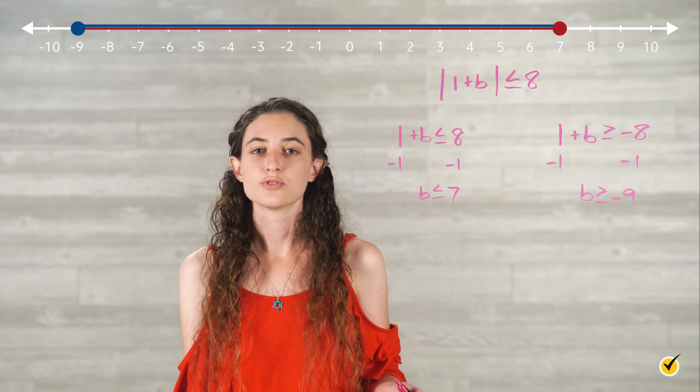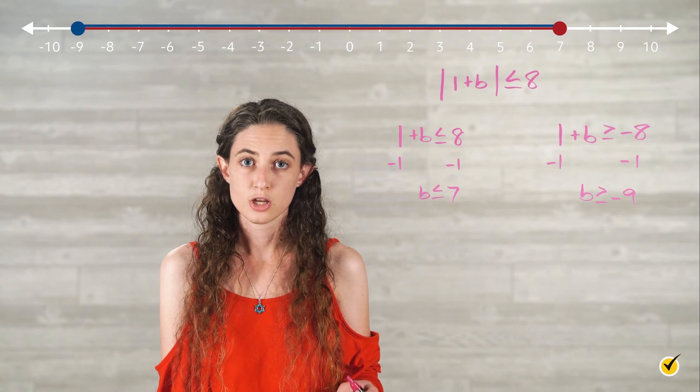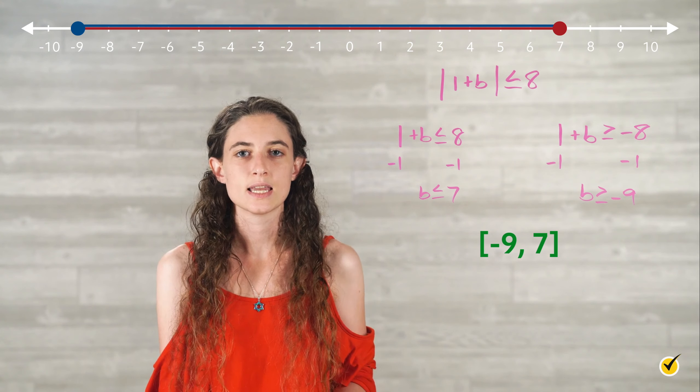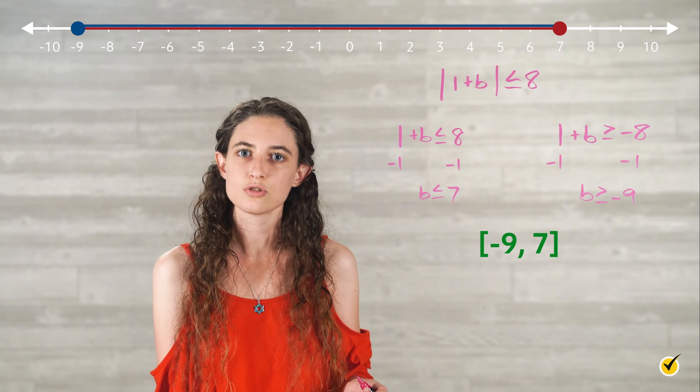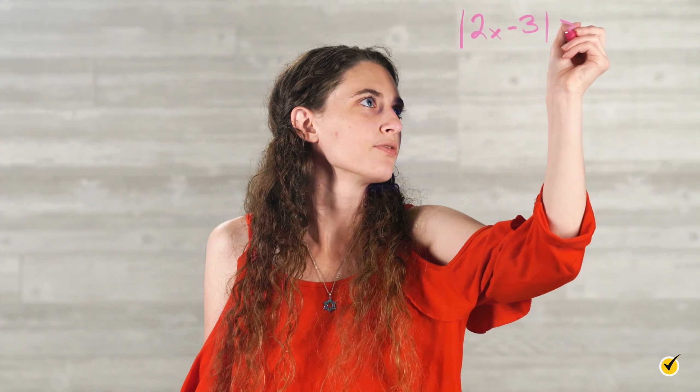The number line now shows all solutions for negative 9 is less than or equal to b is less than or equal to 7. The solution set can be expressed with brackets indicating that both negative 9 and 7 are part of the solution set. Now it's your turn. Following the same steps we've practiced, graph the solution set for the absolute value of 2x minus 3 is greater than 5. Pause the video here, draw a number line, and try this one yourself. When you finish, resume the video and we'll go over it together.